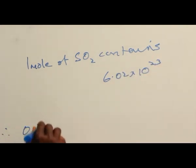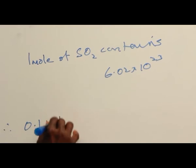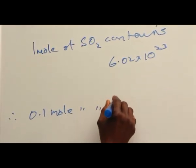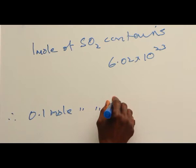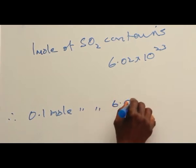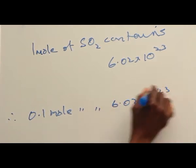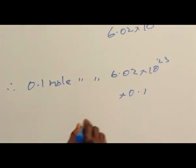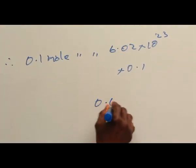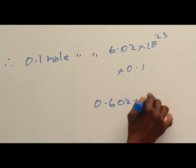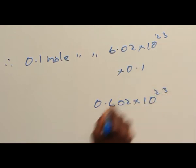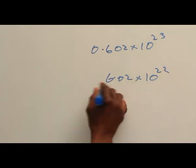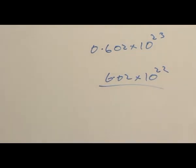Therefore, 0.1 mole of SO₂ contains 6.02 times 10 to the power 23 multiplied by 0.1. That gives us 0.602 times 10 to the power 23, which is precisely 6.02 times 10 to the power 22 molecules.